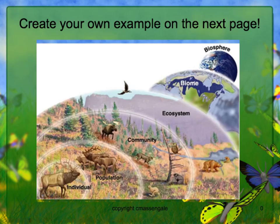Now that you're an expert in the levels of organization, you're going to create your own example on the next page. Choose your own individual organism and identify its population, community, ecosystem, biome, and biosphere. You don't have to draw the pictures — you can find them from Google, or just put the names of the individual organisms. Once you're done, submit back to Schoology and I'll see you tomorrow in class.